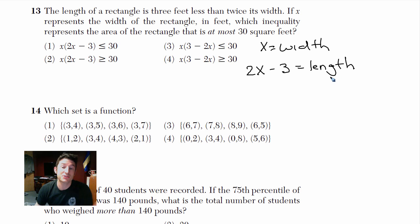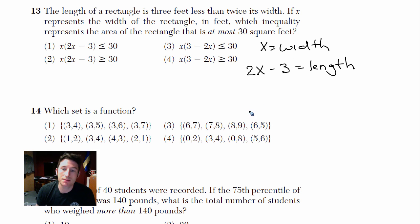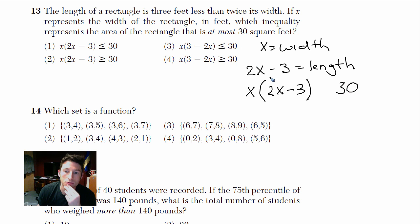Some people might write 3 minus 2x, but you do the multiplication first — twice the width, then 3 less. They want to know which inequality represents the area being at most 30 square feet. Area is always length times width, so I'm doing x times (2x minus 3), and we want that to be at most 30 square feet.